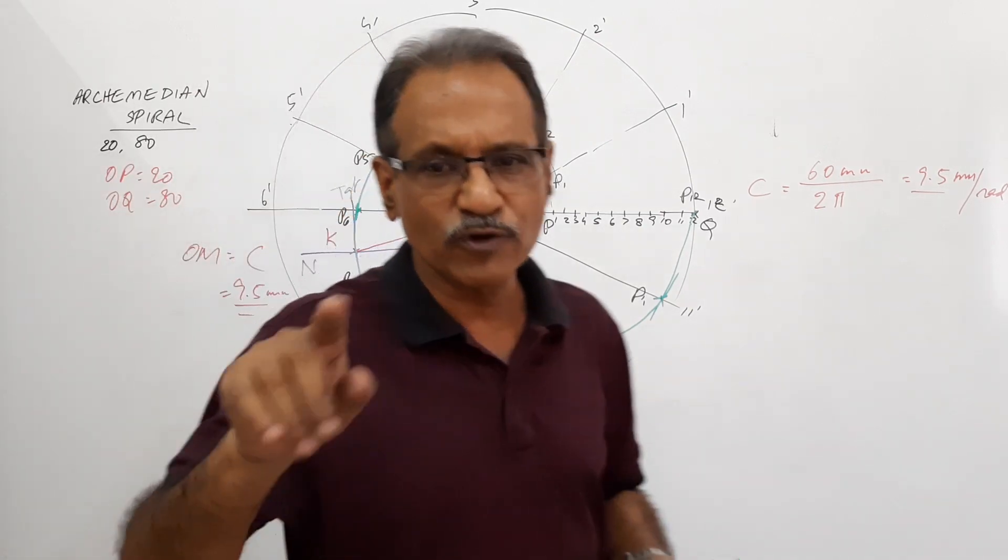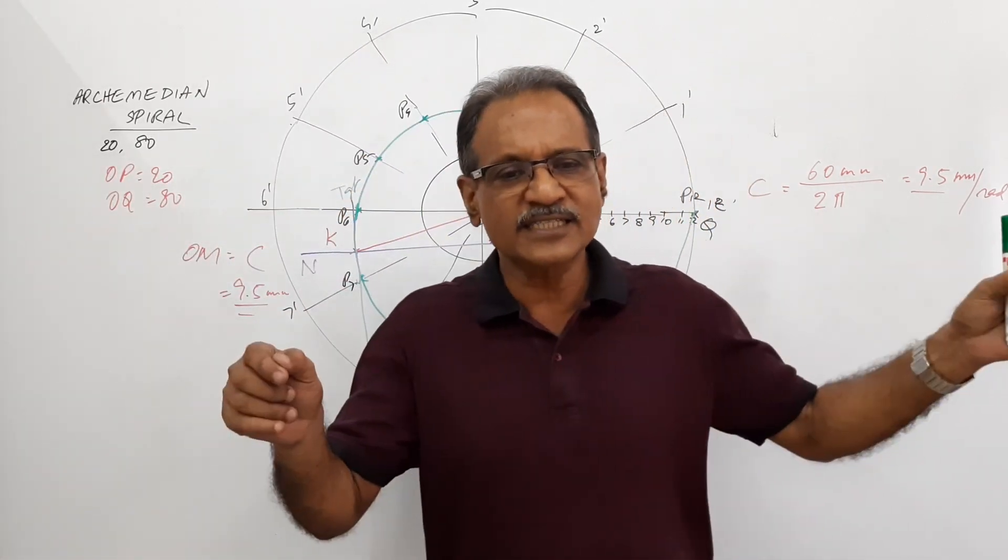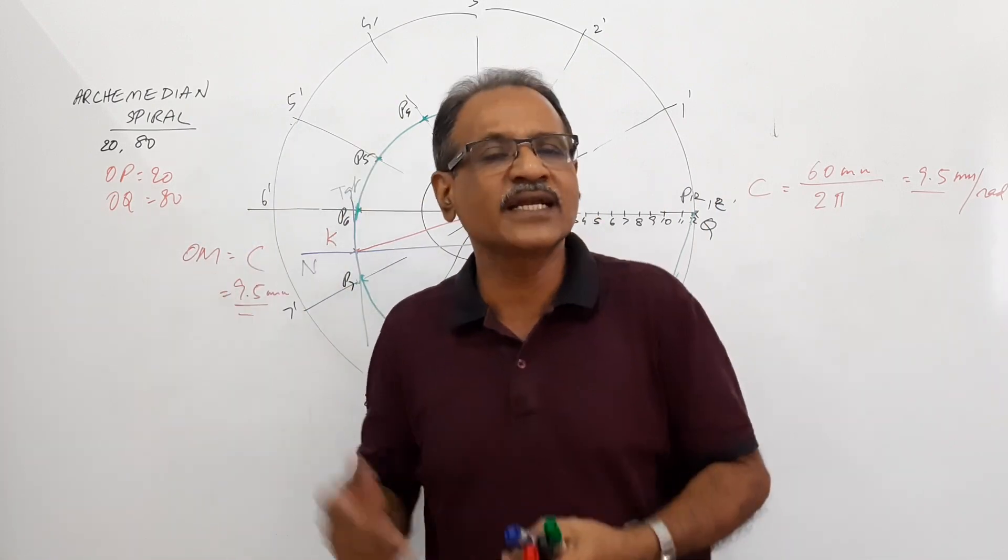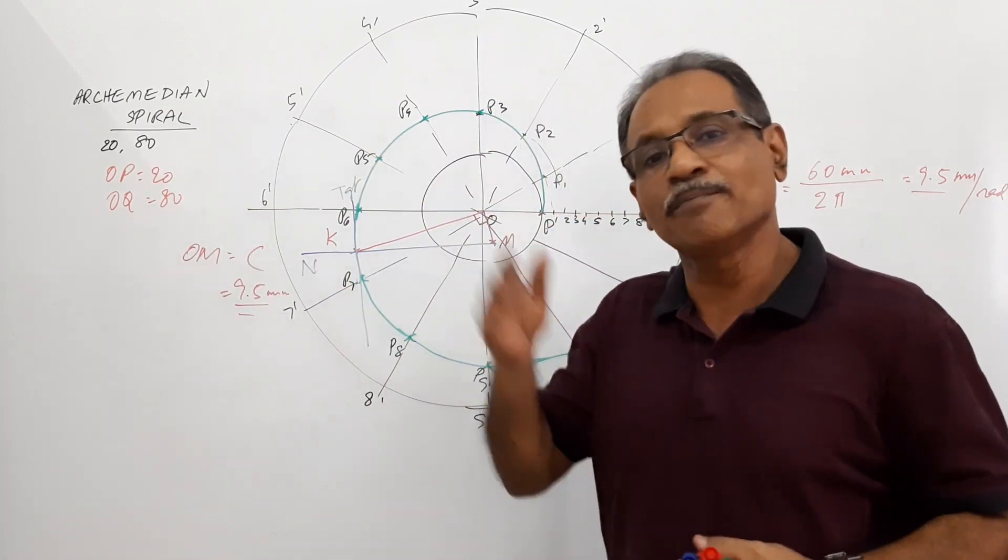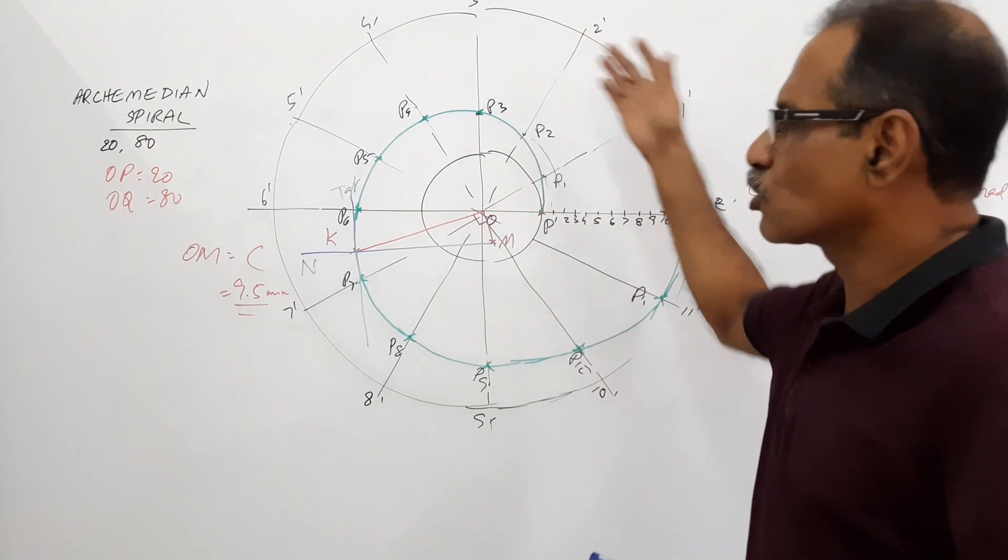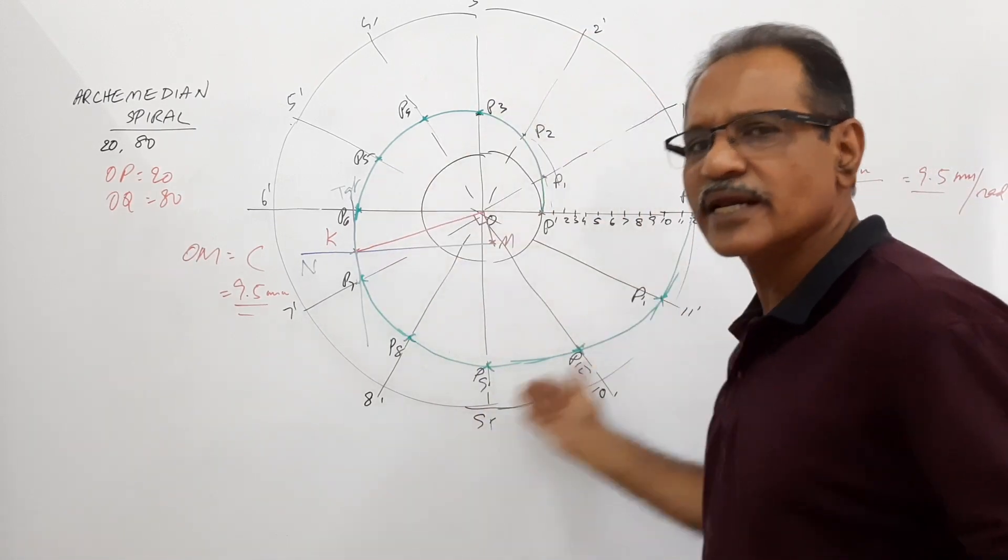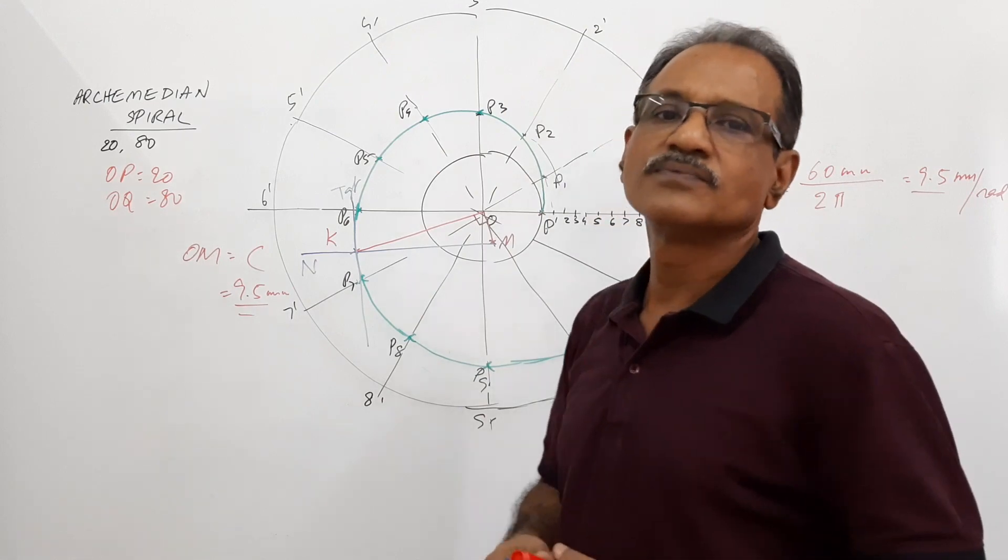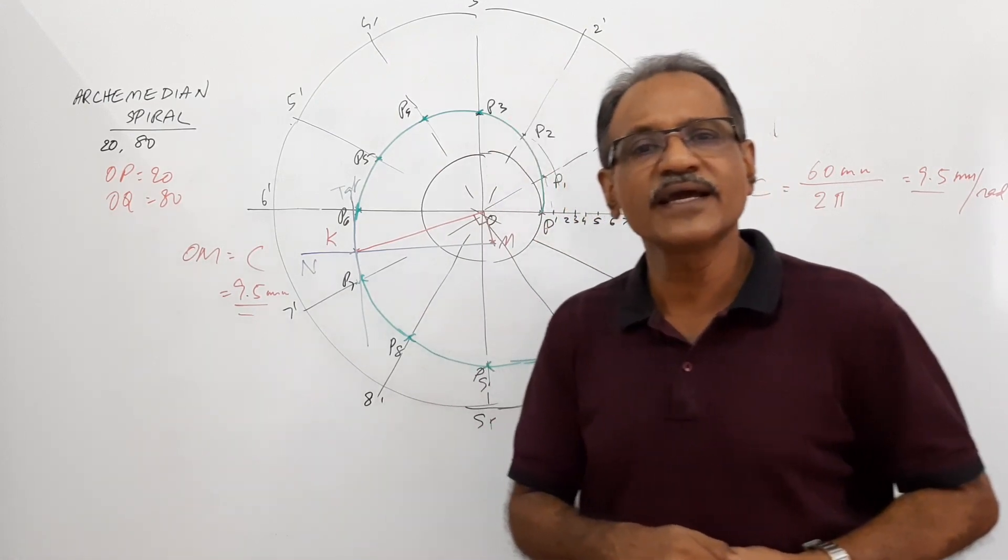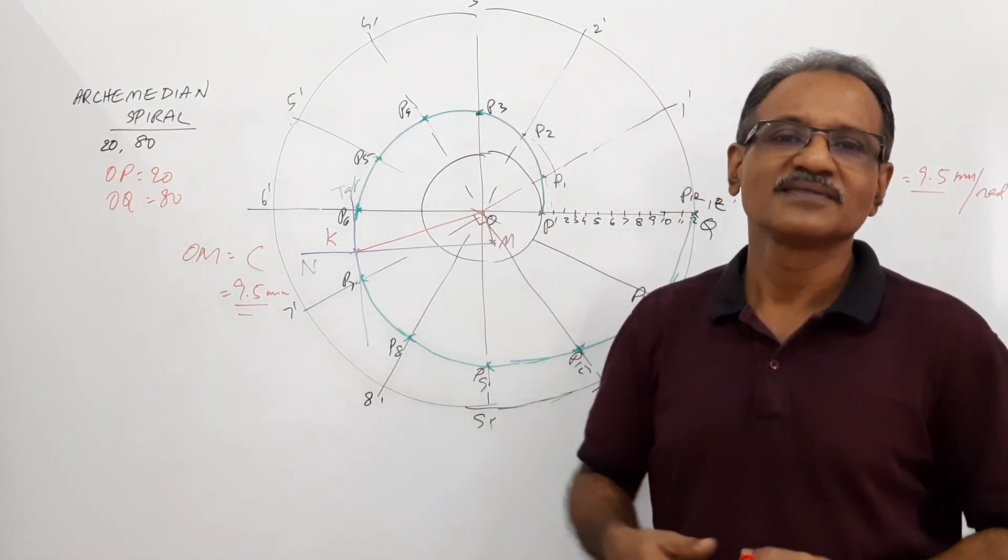So this Archimedean spiral is drawn for one convolution. The radial distance traveled in one rotation is given we directly draw that. You may be asked to draw a bigger curve. You may be asked to draw one and half convolution then the total distance will be given. You have to simply repeat it. That's all. Not a difficult thing. Thank you.